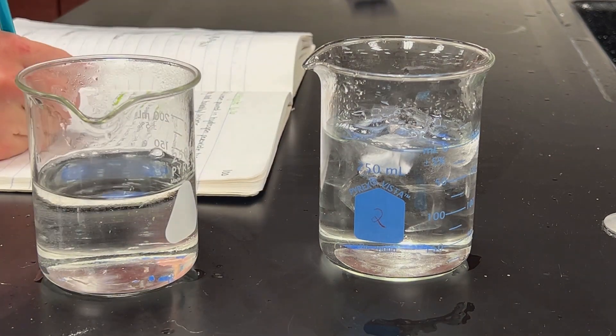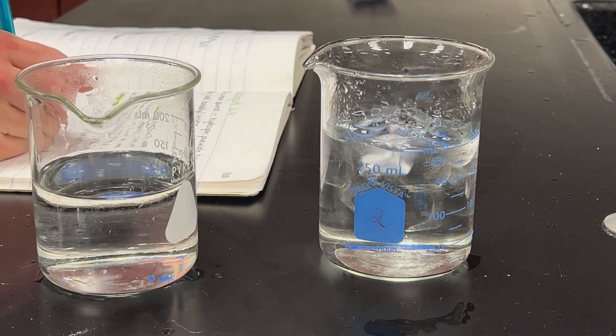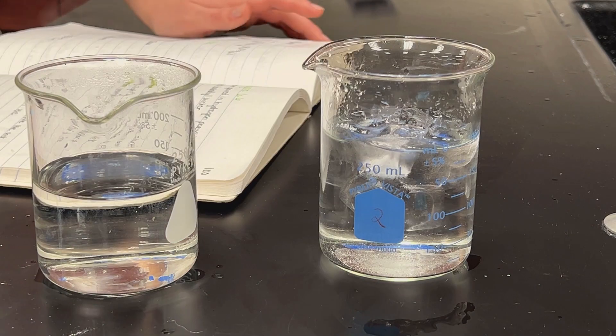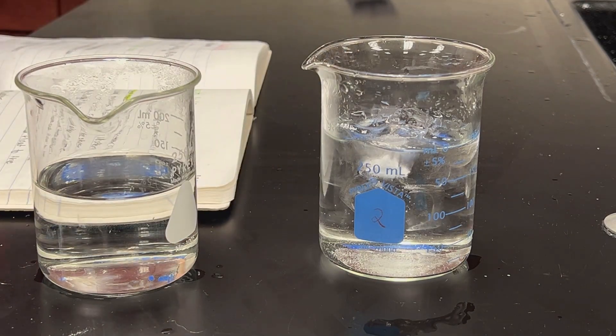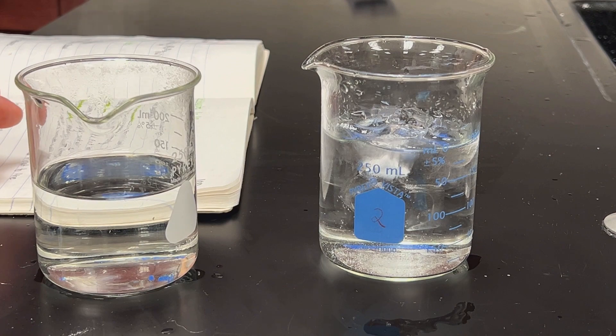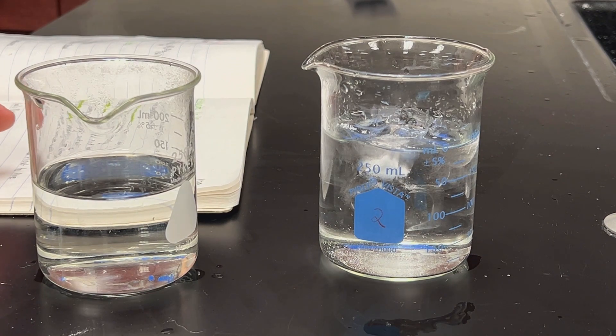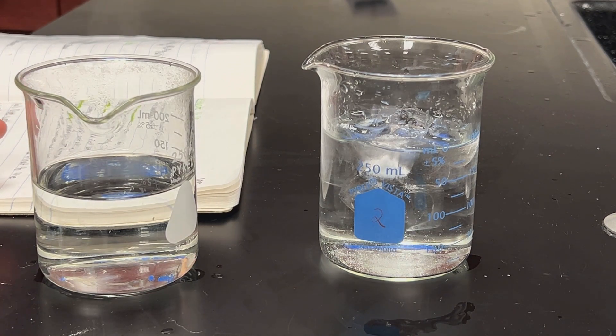You guys ready? Watch it. So prepare two beakers each containing equal amounts of 200 milliliters of room temperature water. So we're going to dump these out and fill them up with just room temperature water.